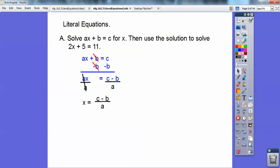Okay, so the second part is we're going to solve, it says the second sentence says, use that solution to solve for 2x plus 5 equals 11. Now I made the 2 and the 5 and the 11 red because they stand for the a's, b's, and c's. So a would be the 2, b would be the 5, and c would be the 11.